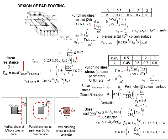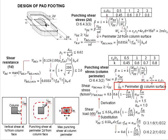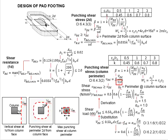Now we look into the punching shear stress at the column perimeter, as indicated by the diagram here. Your VED here will be the shear force caused by the columns acting on the pad footing. It is to be divided by U0D, where U0 is the perimeter of the column surface, as the summation of 2H and 2B. This formula is very identical to the previous formula, except that U0 is different from U. The U here represents the perimeter at 2D from the column surface, while U0 represents the perimeter of the column.